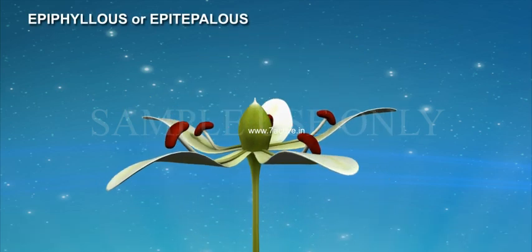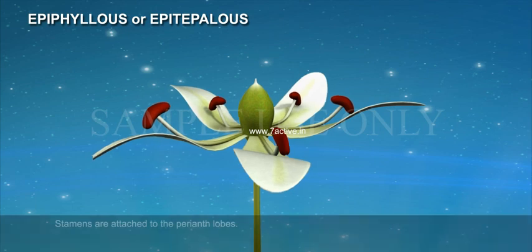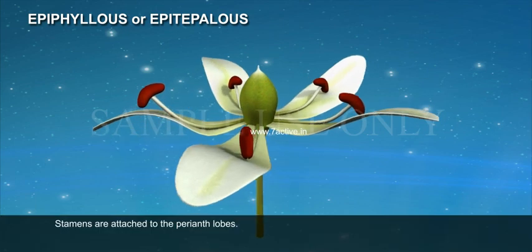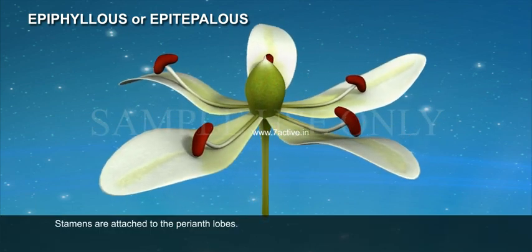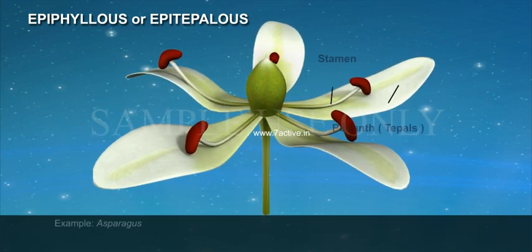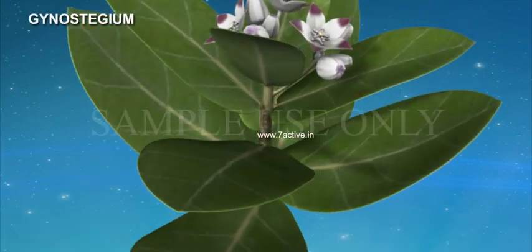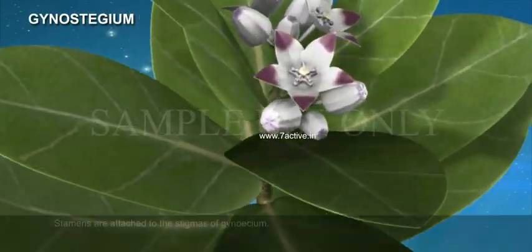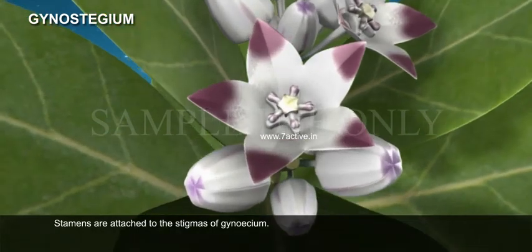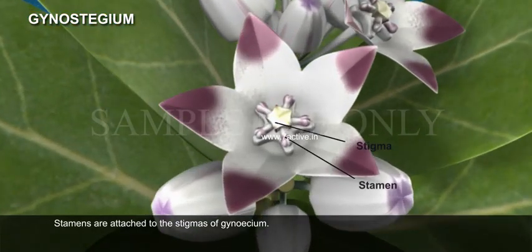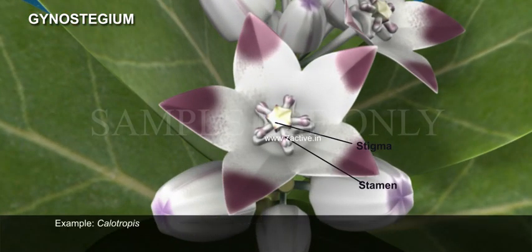Epiphyllous or Epitepalous: stamens are attached to the perianth lobes. Example: Asparagus. Gynostegium: stamens are attached to the stigmas of the gynoecium. Example: Calotropis.